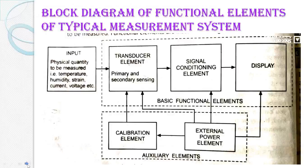Next is the functional block diagram of the functional elements of a typical measurement system. This block diagram represents the typical measurement system. The different blocks are: physical parameter, transducer element, signal conditioning element, display, calibration element, and external power element. The measurement system is divided into two categories: basic functional elements and auxiliary elements.